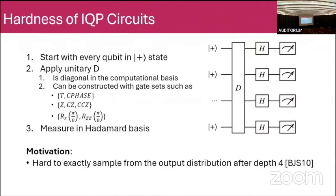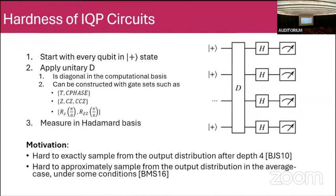Back in 2010 it was found that these circuits are hard to exactly sample from after a depth of four, making them a good candidate for quantum supremacy experiments. This was later improved to show hardness of approximate sampling in the average case under some conditions. These hardness statements rely on complexity-theoretic assumptions like the polynomial hierarchy. Another practical advantage is that IQP circuits don't require a universal gate set, which makes them more amenable to near-term hardware.